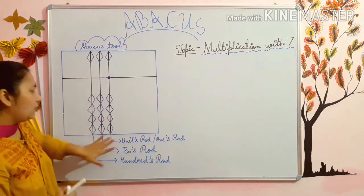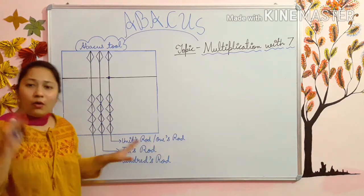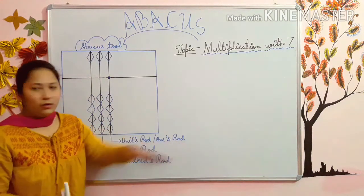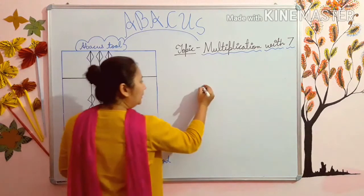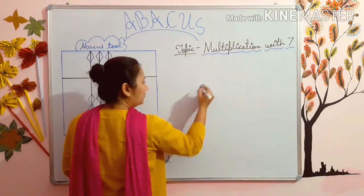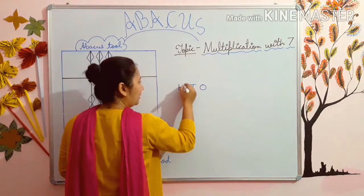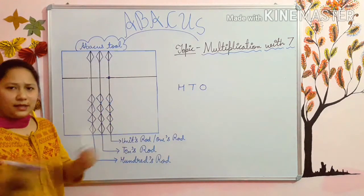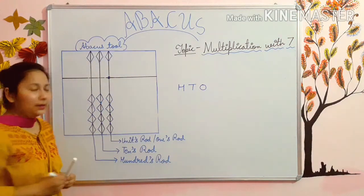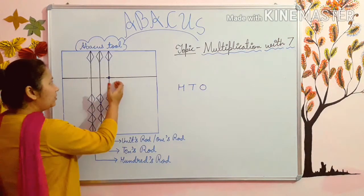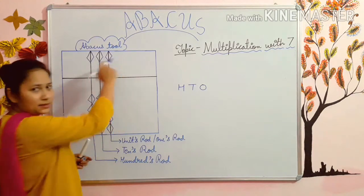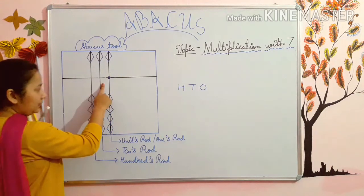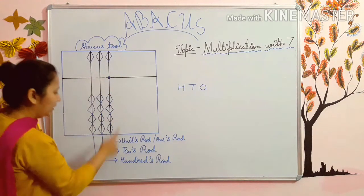And this rod is called the unit's rod, or you can say it the one's rod. You have learnt in maths: ones, tens, hundreds — many times in your maths you have learnt. So this is also: this is ones, this is tens, and this is hundreds rod.